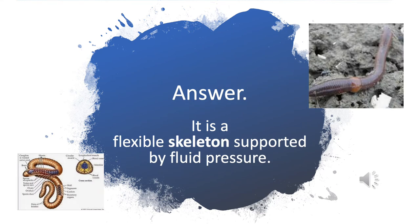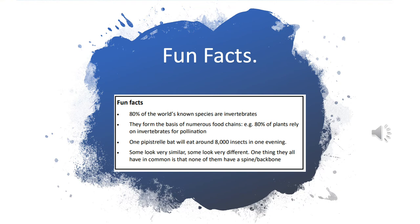Answer: a hydrostatic skeleton is a flexible skeleton supported by fluid pressure. Fun fact: 80% of the world's known species are invertebrates. They form the basis of numerous food chains — for example, 80% of plants rely on invertebrates for pollination. One pipistrelle bat will eat around 8,000 insects in one evening.